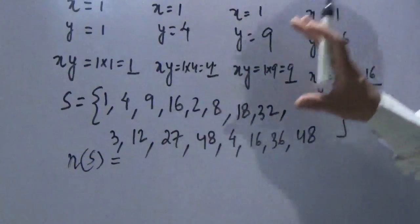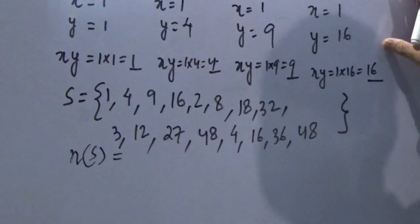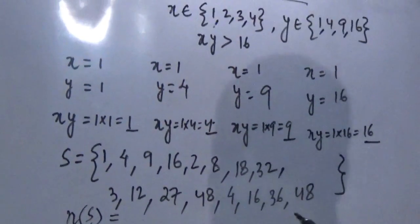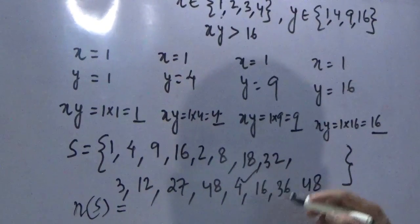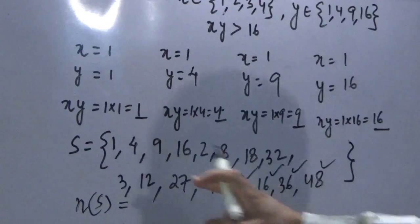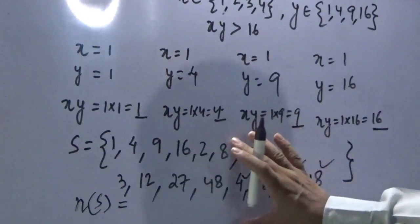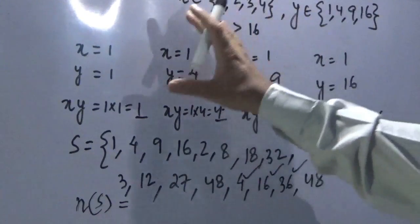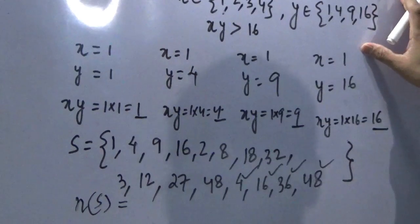Similarly when we take up x equal to 4 and multiply it with all the elements, we get 4, 16, 36, and 48. Now looking at this, we have got all possible outcomes when elements of x are multiplied with the elements of y.